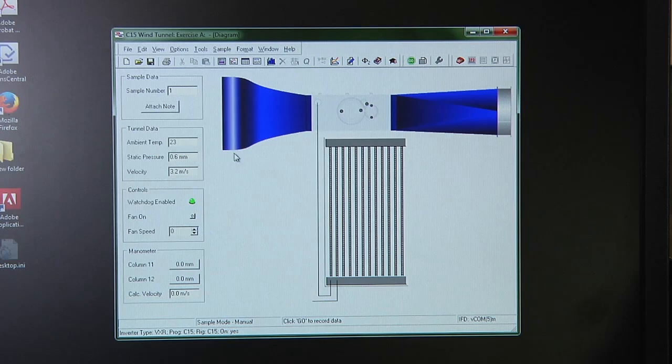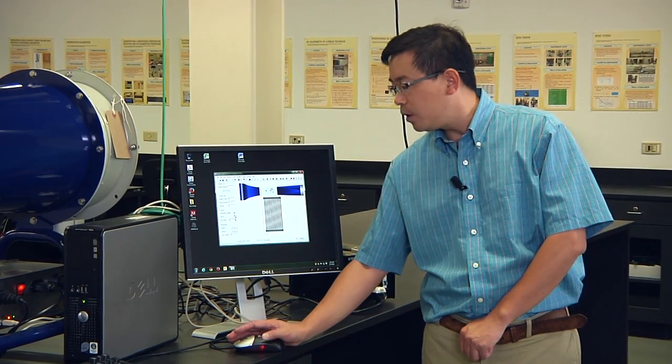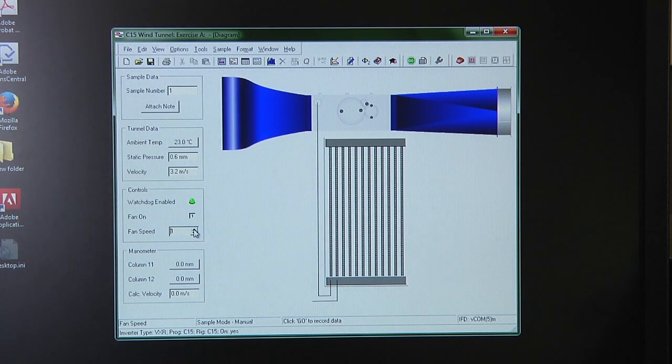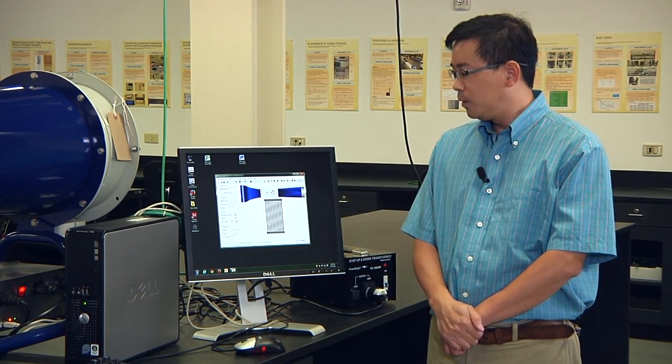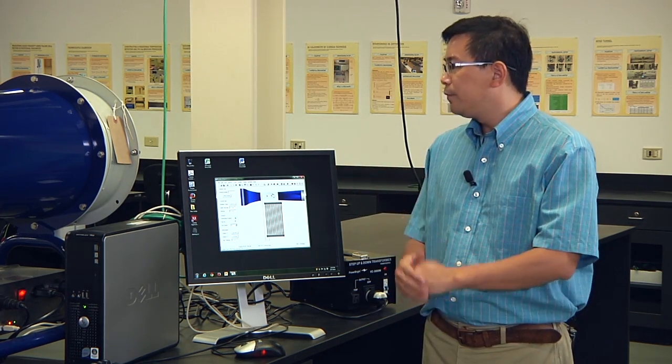We need to click on the fan on. You will see the number zero over here. You click on that one. This number will automatically change to one. It means the wind tunnel is now ready to use. You can increase the wind tunnel velocity by changing the numbers of fan speed from zero to 20 percent. You will see the noise started. That's the fan turned on. Please remember, this 20 percent is not the velocity of 20 meters per second. It gives you the 20 percent of the potential of the fan velocity.